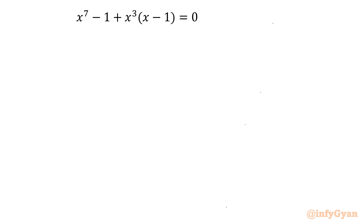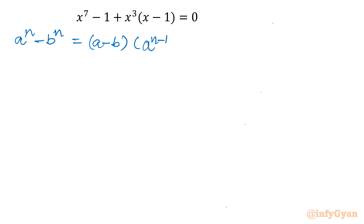Let us begin by writing the powerful algebraic identity: a power n minus b power n equals a minus b times powers in descending order — a power n minus 1 plus a power n minus 2 times b — and the last term would be b power n minus 1, one degree shorter.